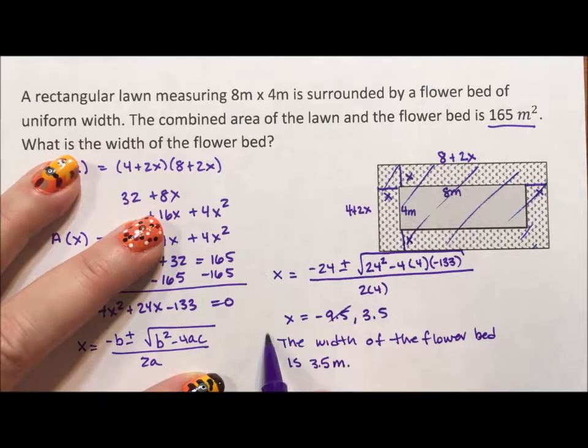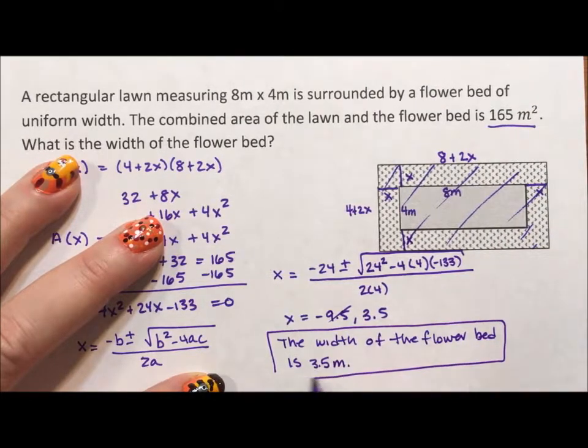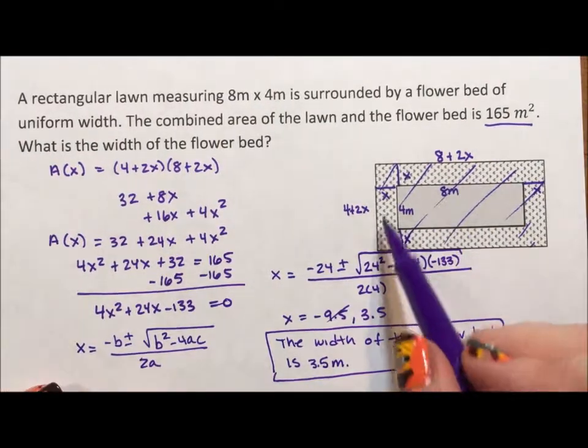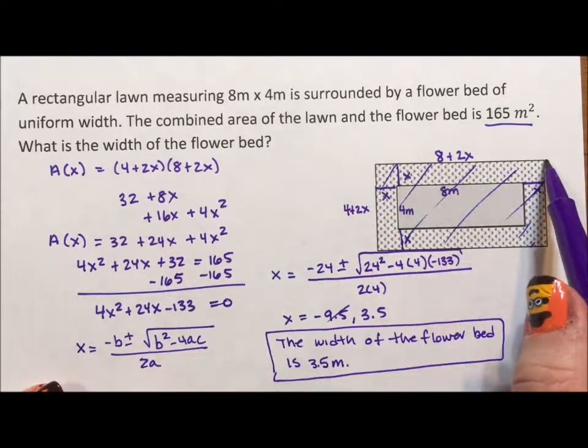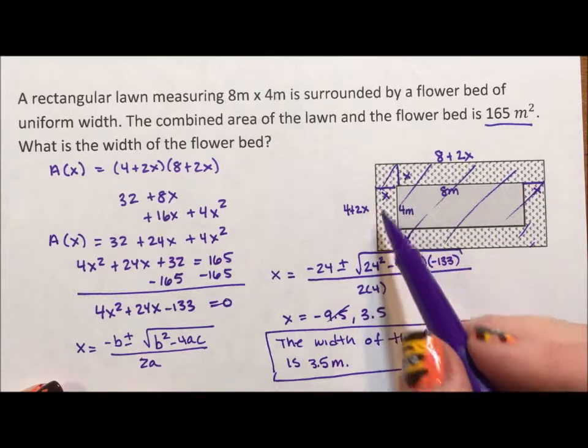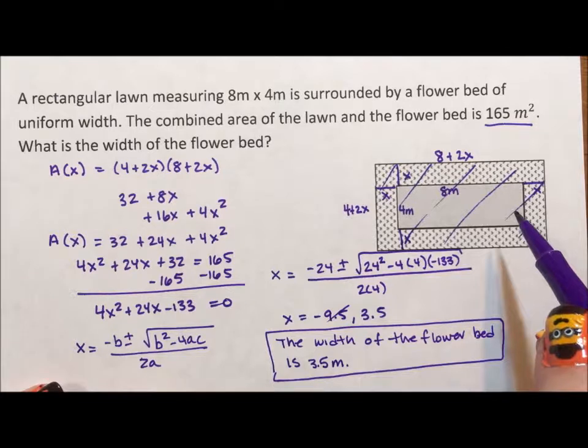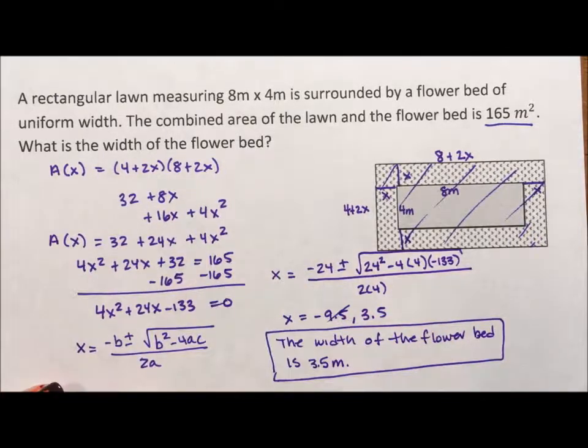Now, it's important that you know what you're answering because this question could have asked, what's the width of the flower bed? It could have said, what is the final dimensions of the full lawn? So there's a lot of ways that this could have gone. So you always have to double check what you're actually answering.